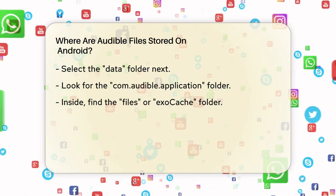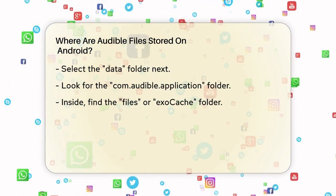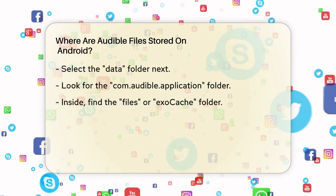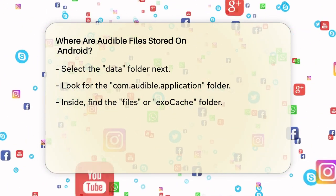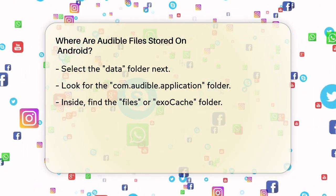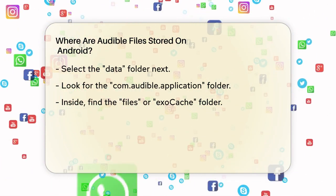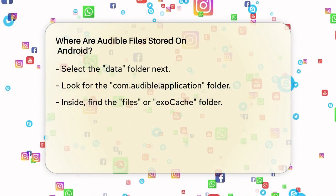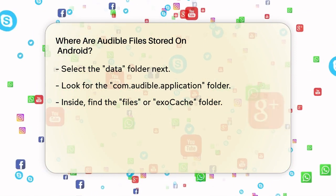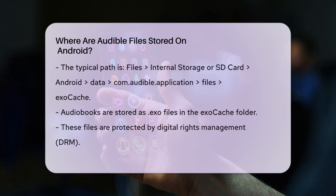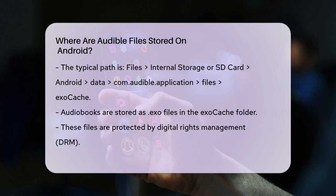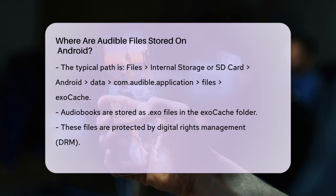To find the exact location, go to the Android folder, then select Data, and look for the com.audible.application folder. Inside this folder, you'll find another folder named Files, or specifically Exocache, if you're using the latest version of the Audible app. The path looks something like this: internal storage or SD card > Android > data > com.audible.application > files > Exocache.